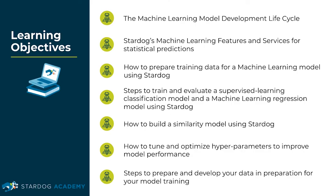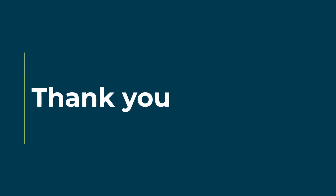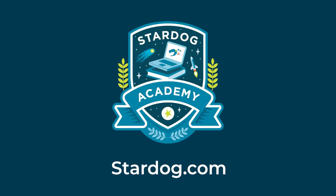That concludes the Stardog Academy training on data science and machine learning for your enterprise knowledge graph. We have reviewed the machine learning model development lifecycle, Stardog's machine learning features and services for statistical predictions, how to prepare training data, steps to train and evaluate a supervised learning classification model and a regression model using Stardog, how to build a similarity model, how to tune and optimize hyperparameters, and steps to prepare your data for model training. Thank you for following along. If you have any questions, please review the frequently asked questions or head to stardog.com/docs for additional information.